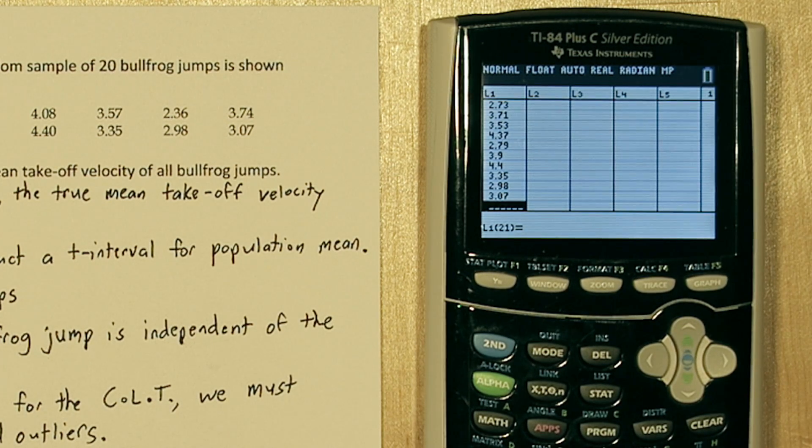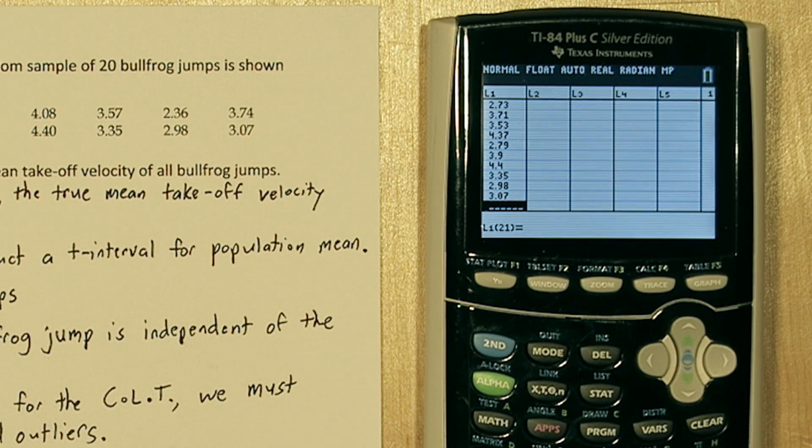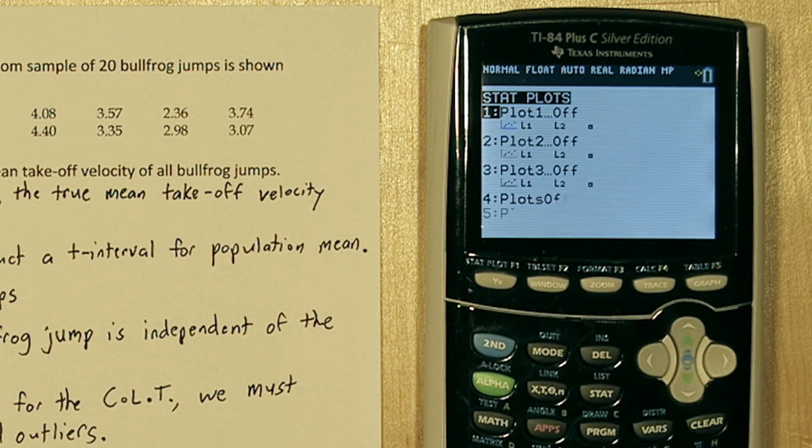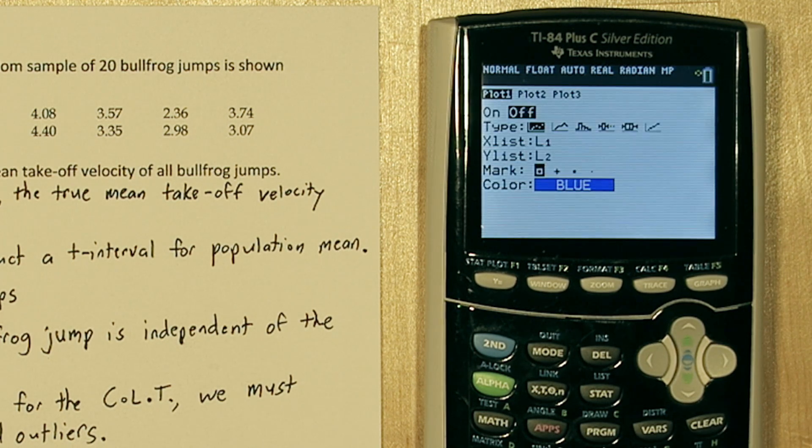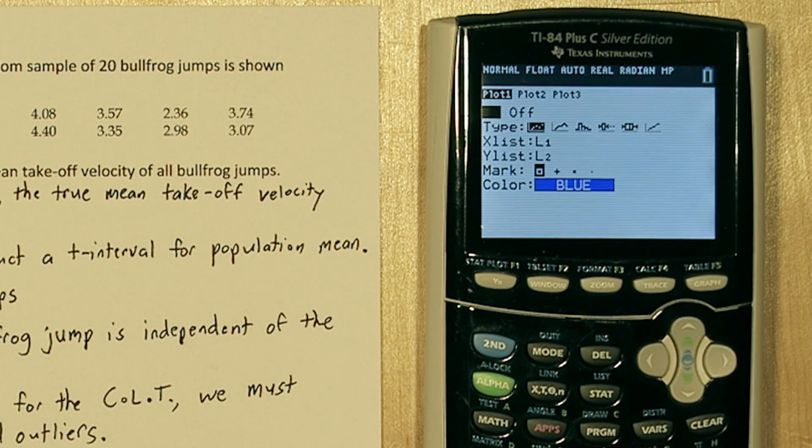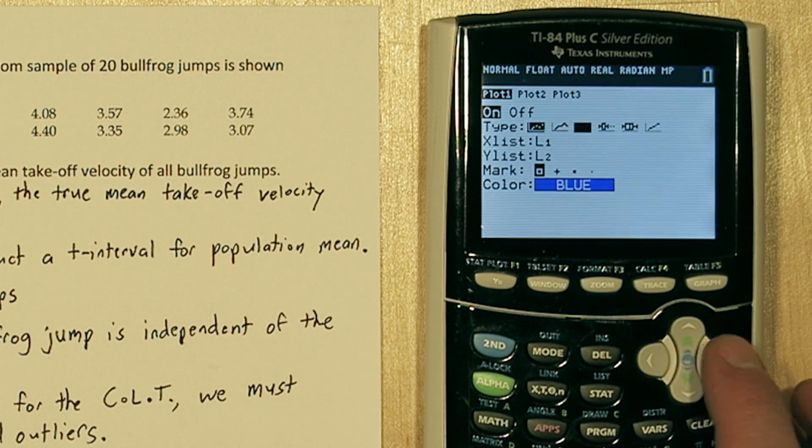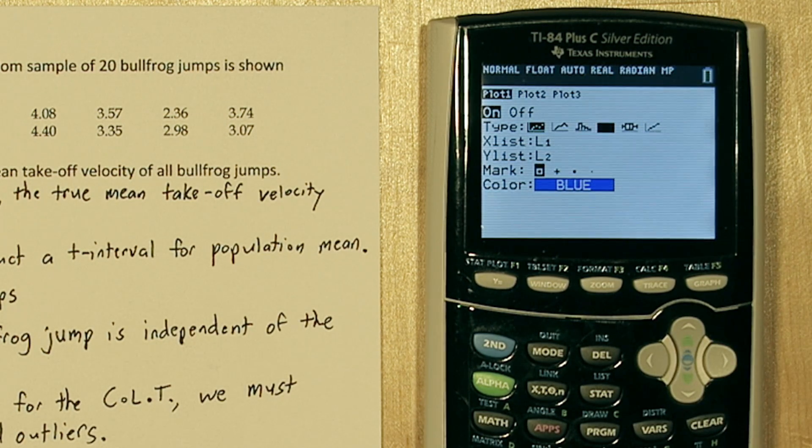Once all the data is input, let's use a modified box plot to check for outliers. Press 2nd, and then the y equals button, which accesses the stat plot menu. If you press enter for plot 1, and turn it on by pressing enter again, scroll over to the modified box plot. That's this one.